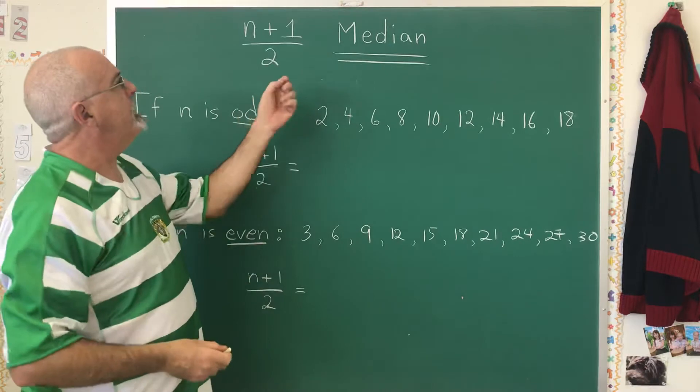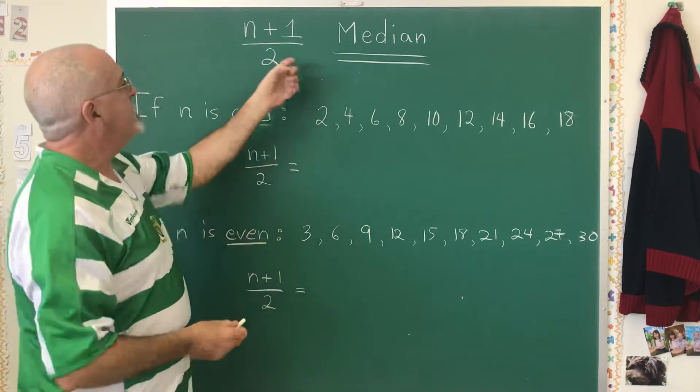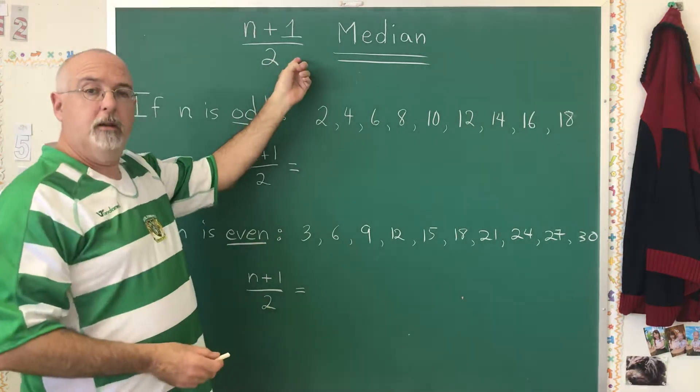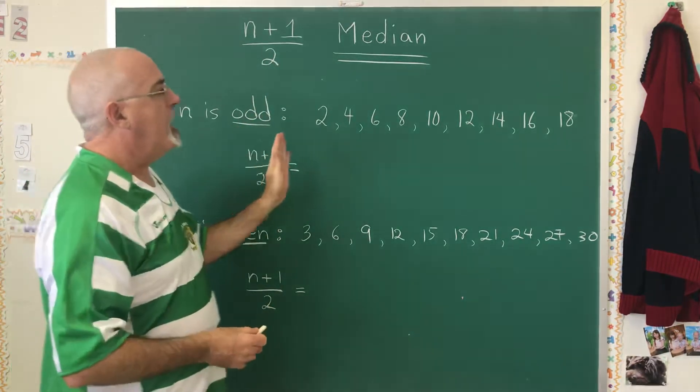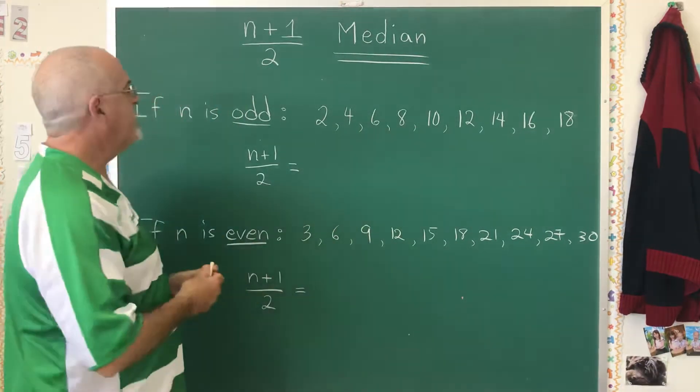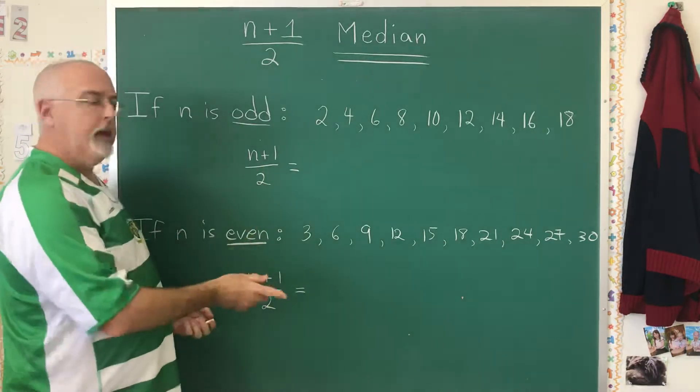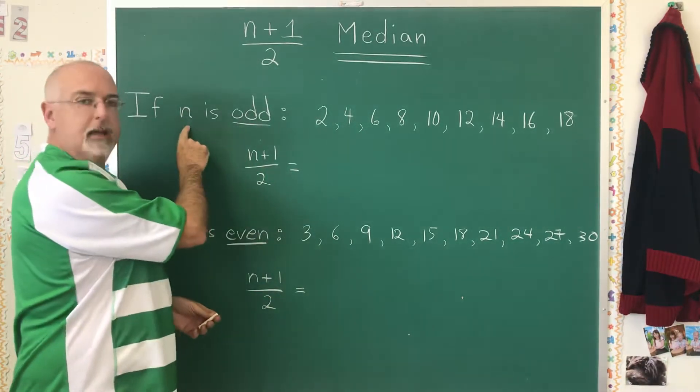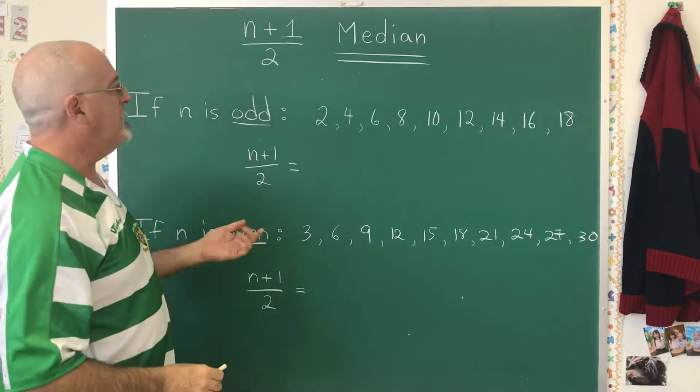And we find the median with this simple little formula n plus 1 over 2. But this doesn't find the median directly. It finds the position of the median. It tells us how far to count until we get to the median. How this works is different depending on whether your sample size n is odd or even. So let's look at an example of each.